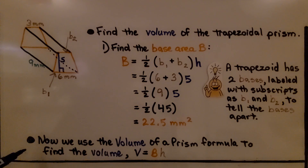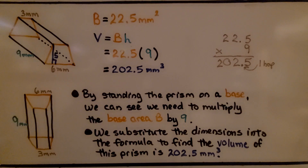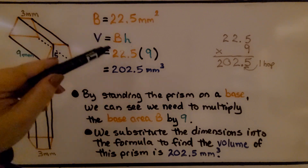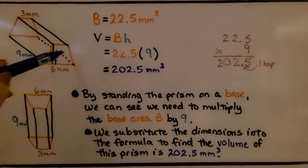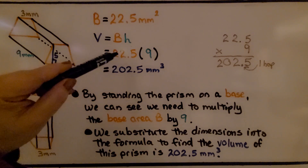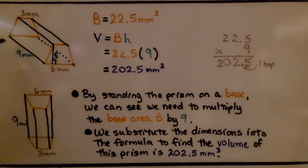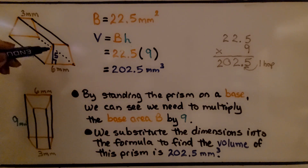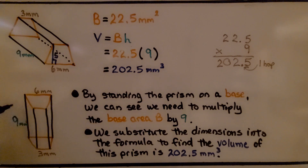Now we use the volume of a prism formula to find the volume: Volume equals base area times height. We found that the base area of this orange trapezoid was 22.5 millimeters squared. We substitute that into the volume formula. Our height is now this edge here — nine millimeters. Imagine standing the prism up; we'd be using nine millimeters as its height. The five was only used for the base area of the trapezoid.